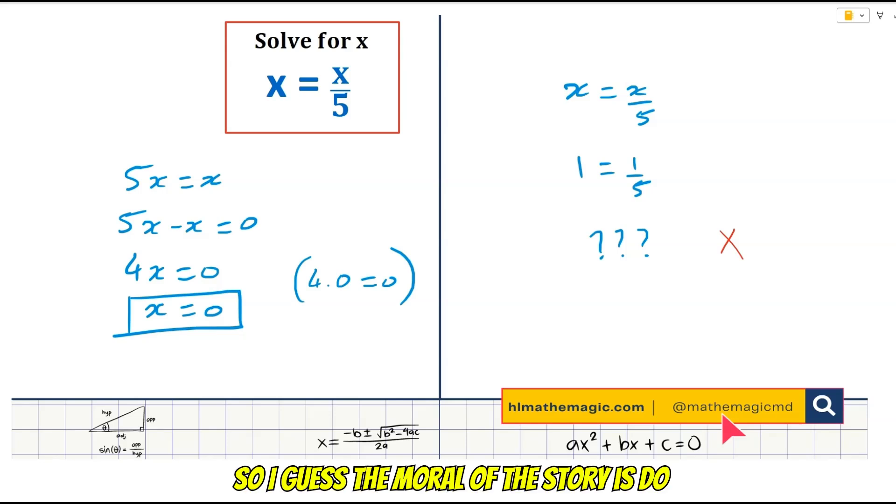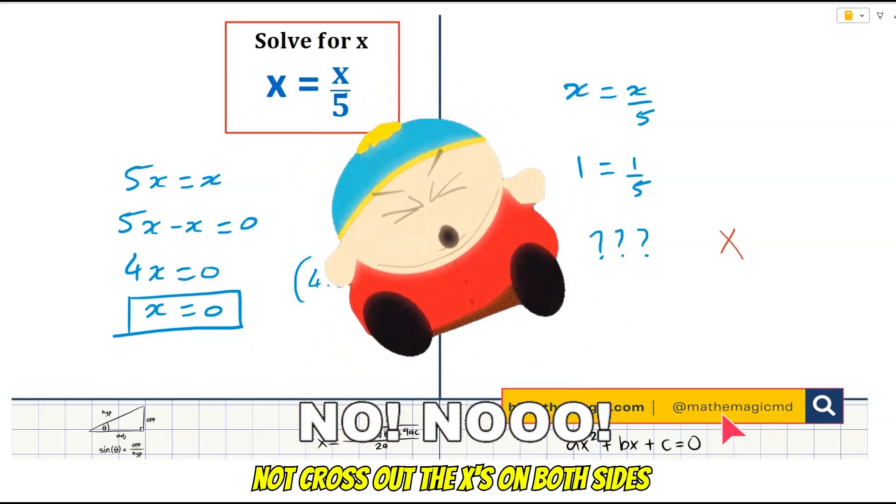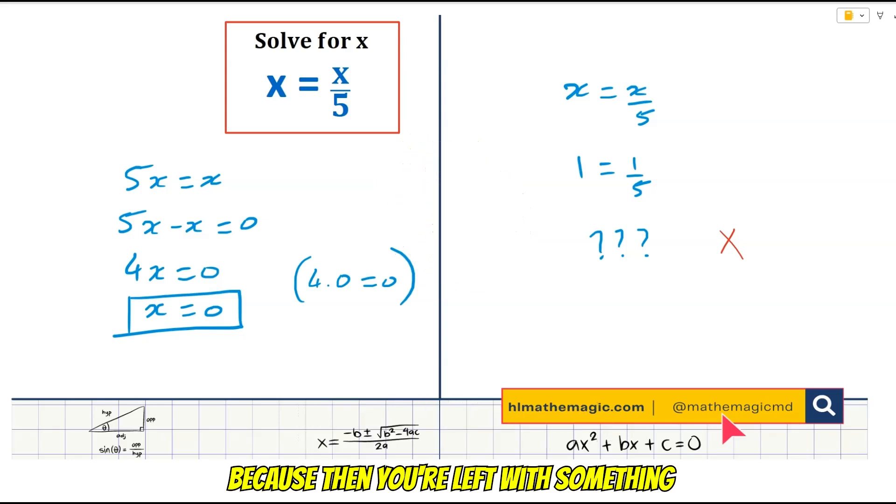So I guess the moral of the story is do not cross out the x's on both sides, because then you're left with something nonsensical like 1 equals 1 fifth, and that in mathematics is not going to get you very far. So you need to make sure you keep the variable and you solve for it rather than eliminate it, and that's the moral of the story.